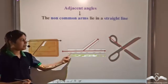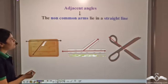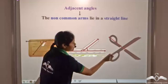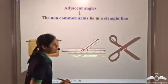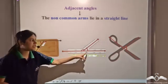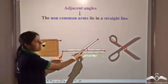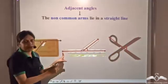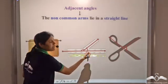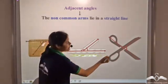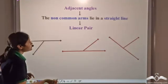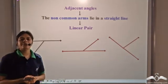Looking again at these pictures, we see that these are adjacent angles. You may also note that for these adjacent angles, the non-common arms lie in a straight line. Such angles are called a linear pair of angles.